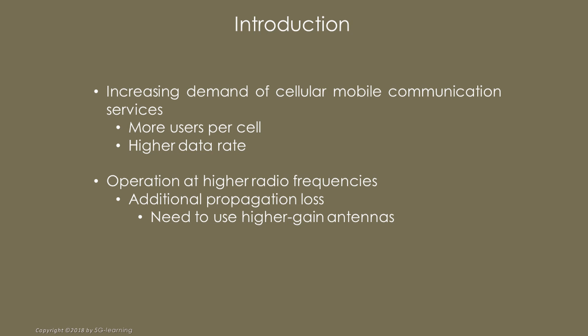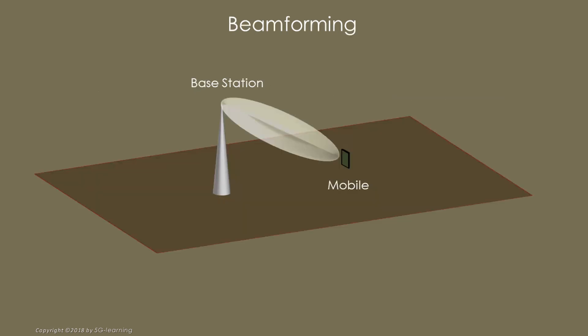But as the carrier frequency increases, the power loss on the base-to-mobile path increases as well. To compensate for this additional attenuation, higher gain antennas are required. A solution to this problem consists in concentrating the radio waves power on the line linking the base station and the mobile equipment.